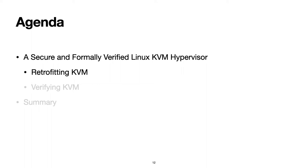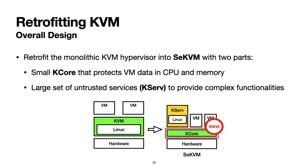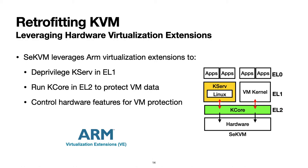Microverification leverages microkernel design to retrofit KVM into SCKVM, which includes a small hypervisor core, KCore, that protects VM data in CPU and memory, which we verify. SCKVM also includes a large set of untrusted hypervisor services, KSERV, that includes the Linux kernel integrated with KVM to provide complex virtualization functionality. SCKVM supports ARM virtualization extensions, deprivileging KSERV to ARM's kernel mode EL1 and running KCore in EL2, a higher privileged hypervisor mode.